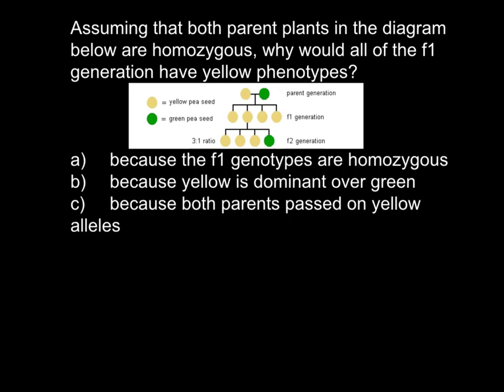Hi, today is going to be an easy question from Mendelian genetics. Everything you need to know to solve this problem is what a dominant and recessive allele is, and how to build a Punnett square. The question is: assuming that both parent plants in the diagram below are homozygous, why would all of the F1 generation have yellow phenotypes? We have three answers to choose from. You can stop the video here and think on your own.